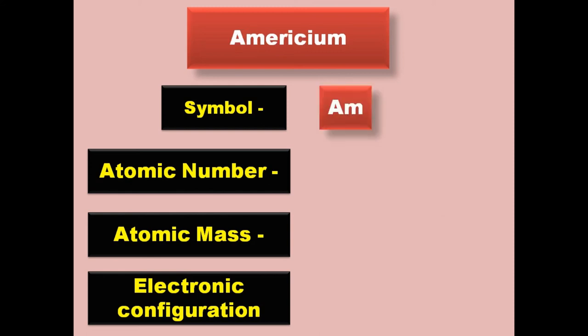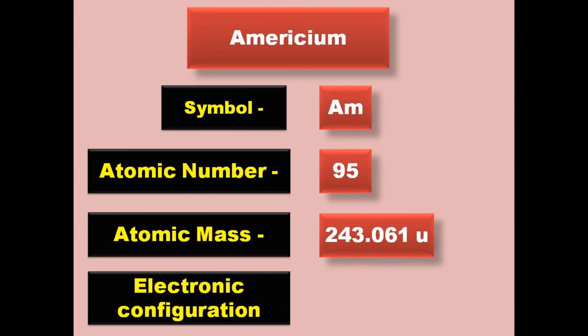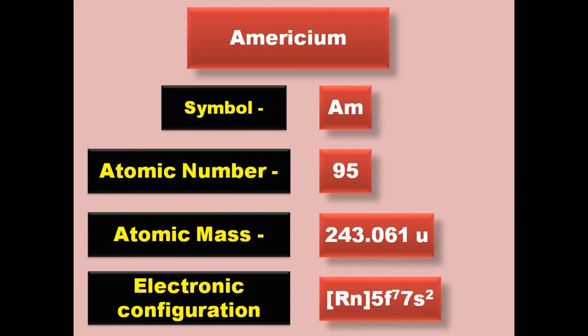Americium has symbol Am, atomic number 95, atomic mass 243.061, electronic configuration [Rn] 5f7 7s2. Americium is an actinide and exists in solid form at room temperature.